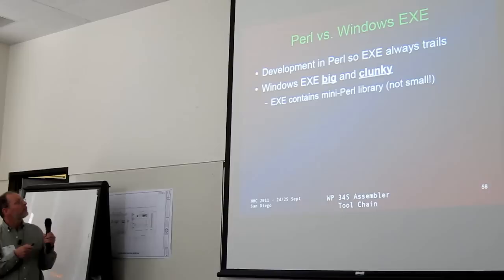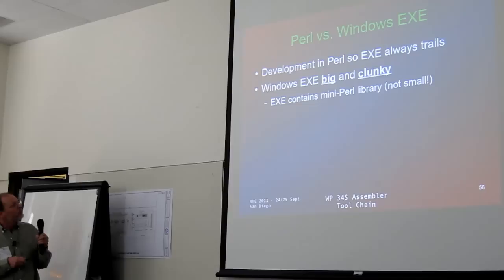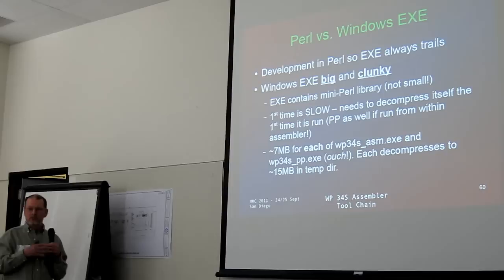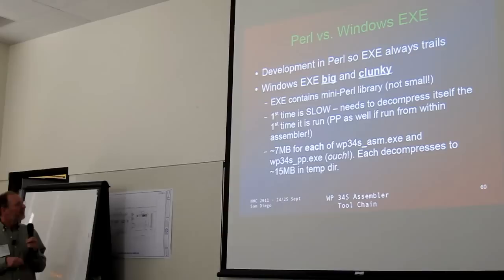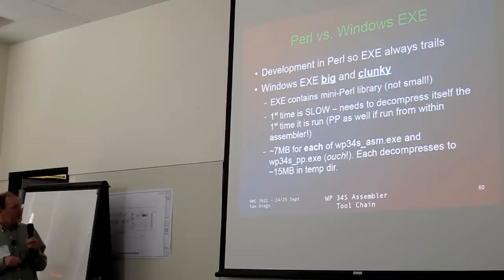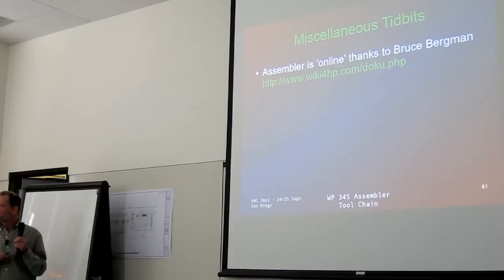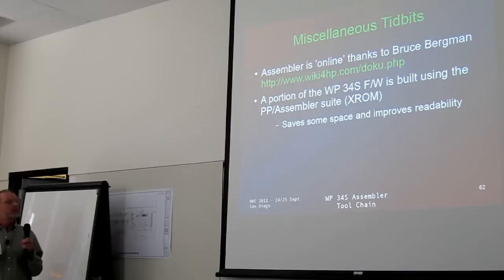Perl is where this thing is written, but there is a Windows EXE. Perl is always current — I don't always get around to compiling the Windows version. It's quite slow the first time it runs because it has to decompress everything; each image starts at about 7 megabytes and ends at about 15 megabytes. Bruce put this thing online, so you can give it a code and it will email back the results if you don't want to install it on your machine.